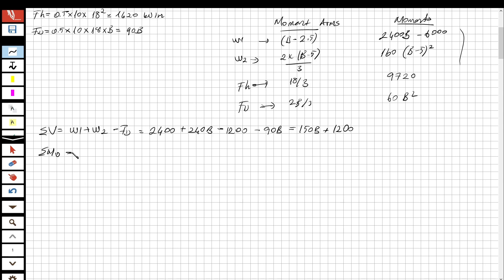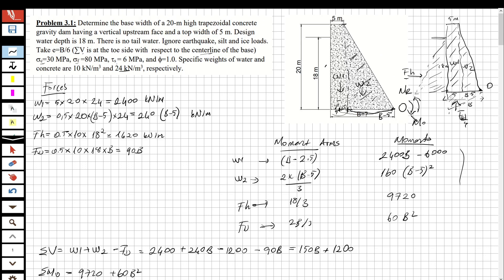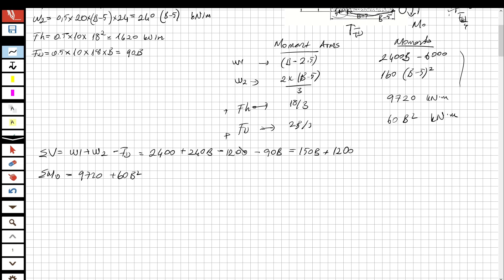The overturning moment is the sum of moments from hydrostatic and uplift forces: M_OT = 9720 + 60b². Both these forces rotate the dam clockwise about the toe, confirming they are the overturning moment contributors.